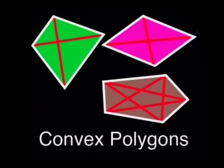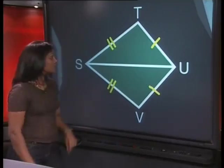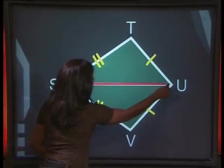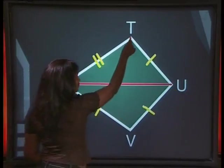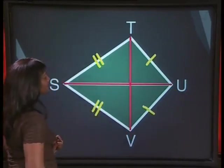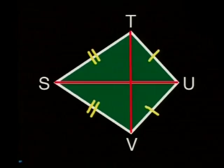For a convex polygon, all the diagonals lie inside the polygon. Can you identify the diagonals in the shape? Well, SU is one diagonal. And if we join T to V, that would be the other diagonal. Now, do you see that both these diagonals lie on the inside of the shape? That's what makes it convex.